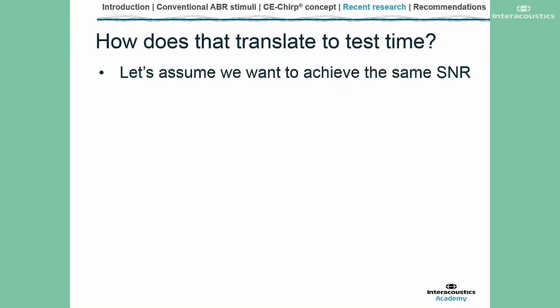In the right-hand panel, I've got the results from 1kHz, and this is also very similar. How does this translate to the actual test time? We've seen that this gives us a larger response and we're expecting that we can reduce the time to do the testing. To work through the maths: I want to assume we're going to obtain a response with the same signal-to-noise ratio as we'd get with tone pips. The signal-to-noise ratio varies as the number of sweeps squared.